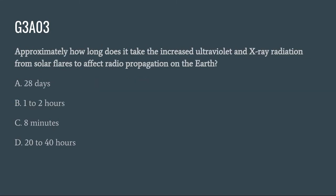G3A03: Approximately how long does it take the increased ultraviolet and X-ray radiation from solar flares to affect radio propagation on the earth? A. 28 days. B. 1 to 2 hours. C. 8 minutes. Or D. 20 to 40 hours. The correct answer is D: 20 to 40 hours.